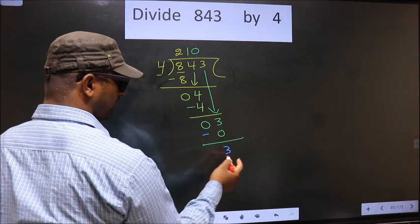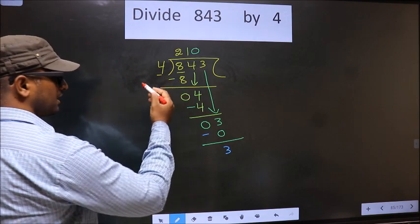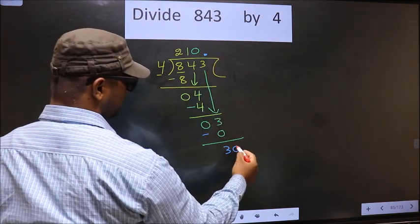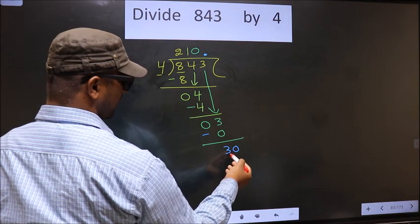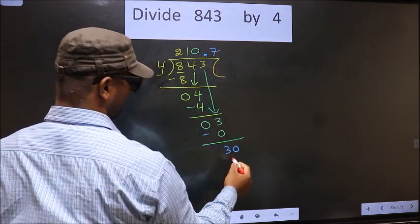Over here, we did not bring any number down. And 3 is smaller than 4. So now you put a dot and take 0 here. So, 30. A number close to 30 in 4 table is 4 sevens, 28.